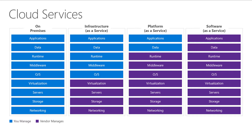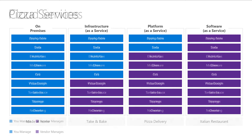In software as a service, that includes the networking layer, cabling, storage, servers, hardware, software, applications, runtime — all of that is all part of the service. So sometimes it's a little bit easier to break this down into terms that we can think of and consume a little bit easier. I like this next slide where we think about IaaS, PaaS, and SaaS as pizza.